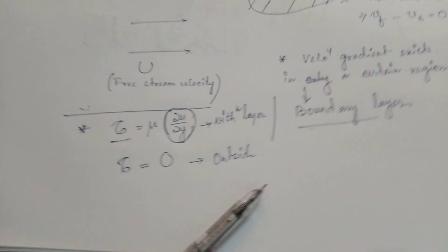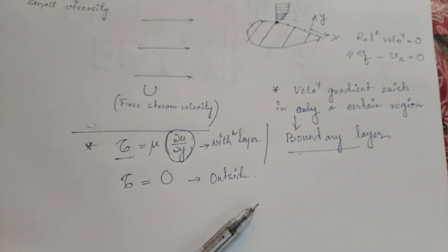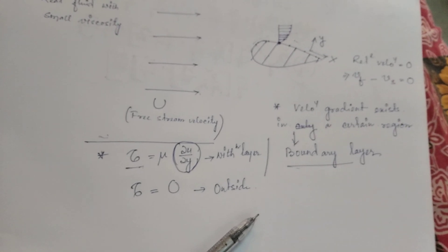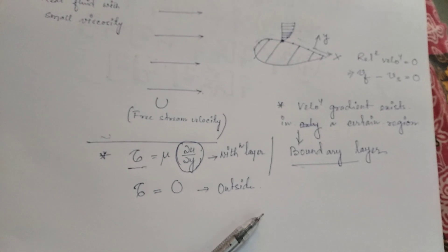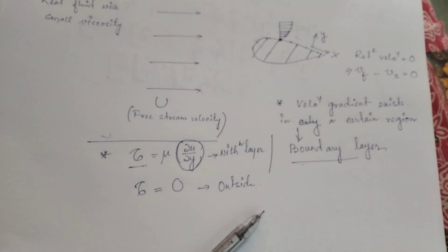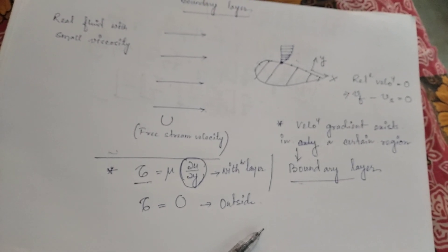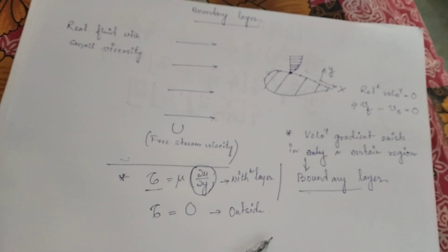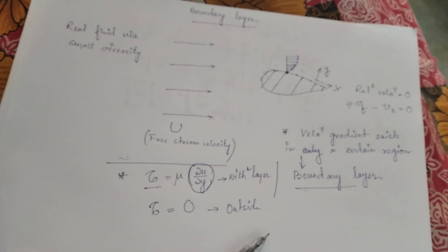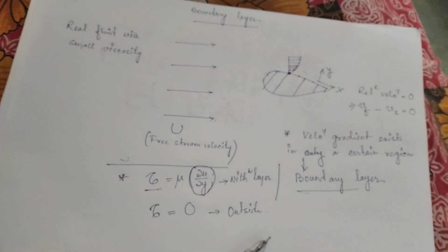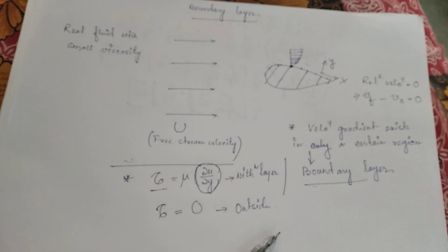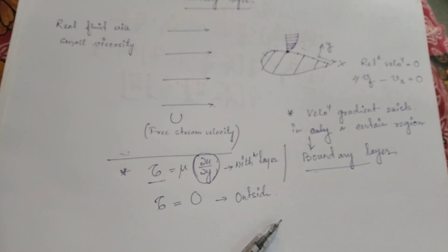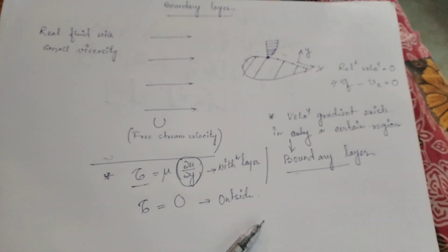Inside the boundary layer there exists shear stress, which is connected with internal friction. So within the layer the presence of viscosity is dominant, but outside the layer you can neglect the viscosity. In the case of a real fluid with small viscosity — for example water, which has a very small viscosity — when it flows around a surface, there exists an imaginary layer. Within this layer there is shear stress, but outside the layer shear stress can be neglected. This layer is called the boundary layer.